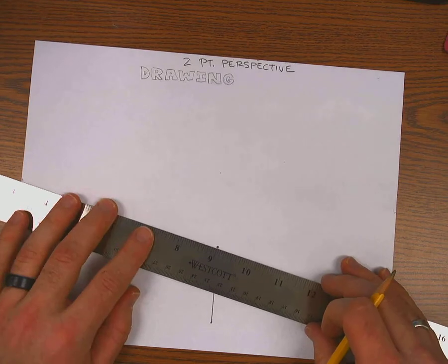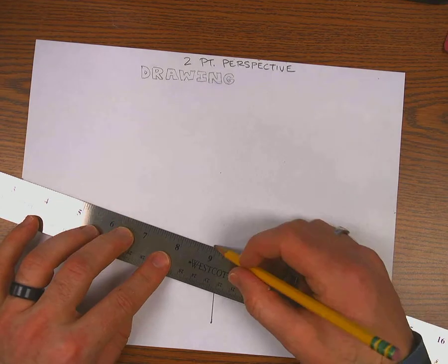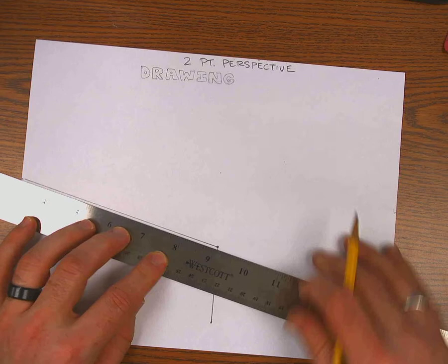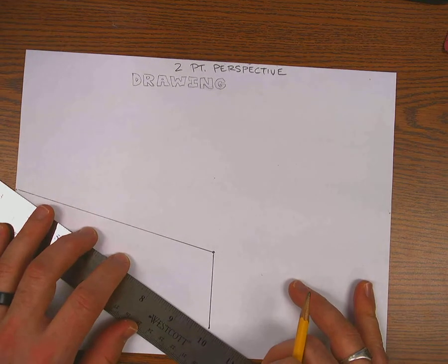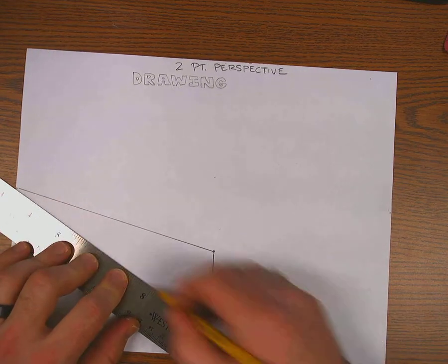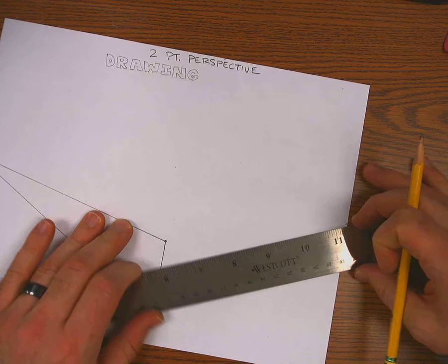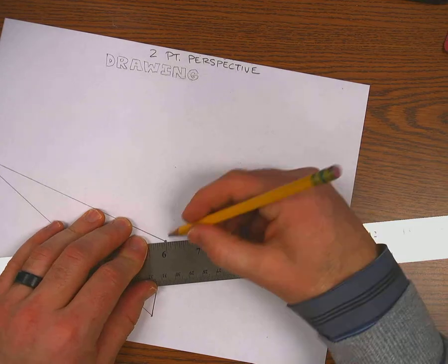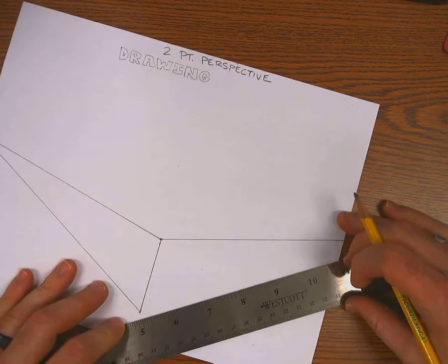And now I just want to connect those dots. Now you need to draw lightly because you'll do a lot of erasing. I'm going to draw dark so you can see it. I'm connecting the top and the bottom of that vertical line to the vanishing point on the right and on the left.